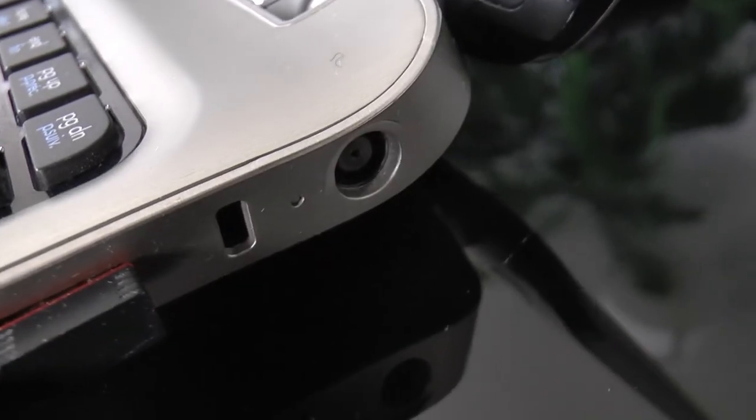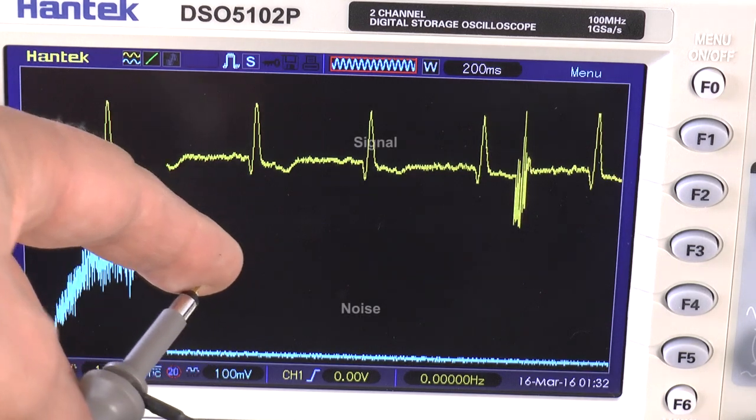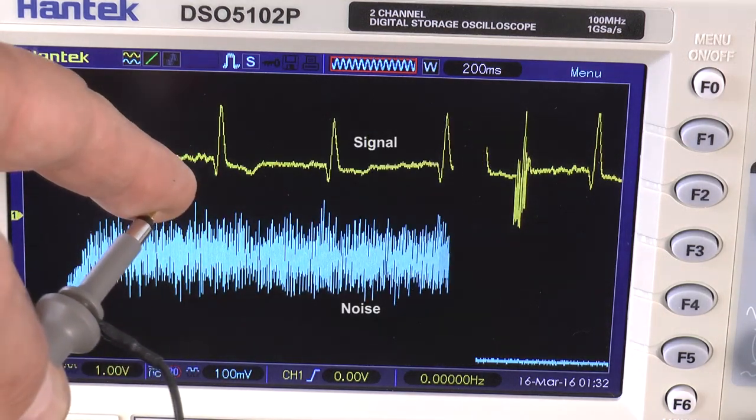A laptop without a connection to the AC power adapter is used for safety reasons. The AD8232 is an integrated circuit developed by analog devices several years ago. It contains everything that is necessary to extract, amplify and filter small biopotential signals in noisy conditions.